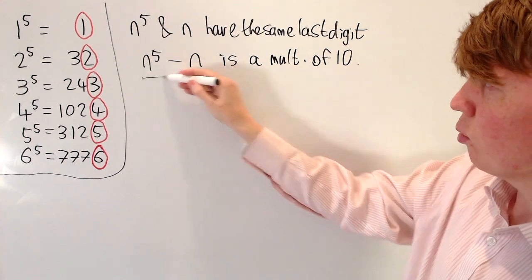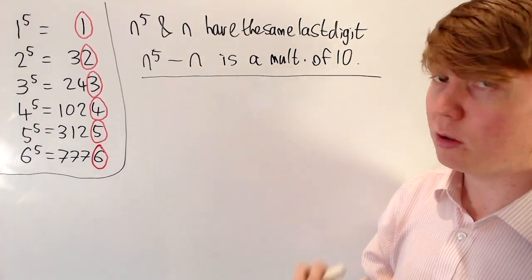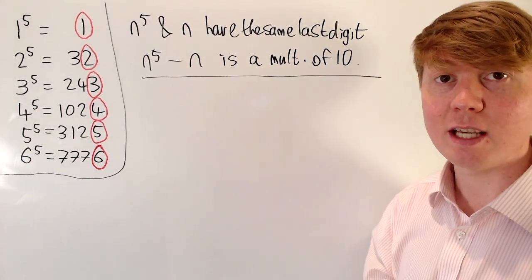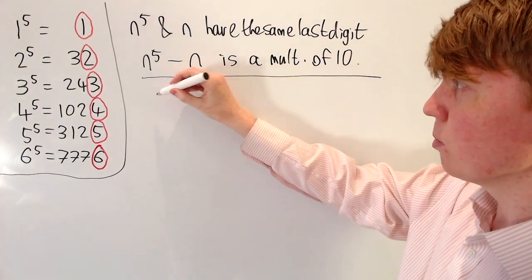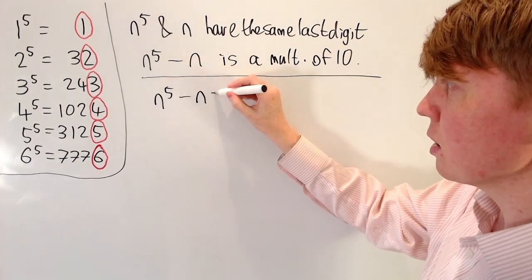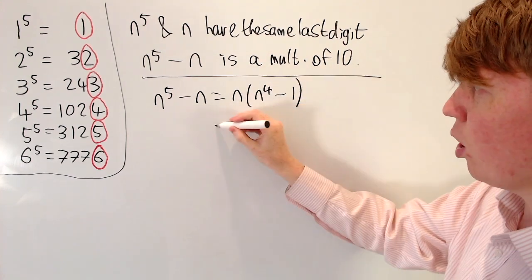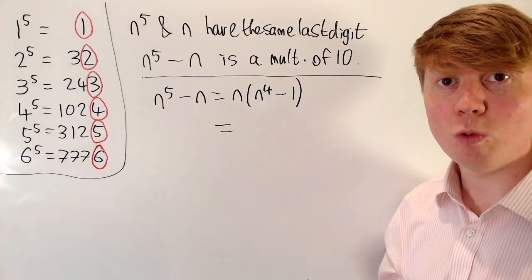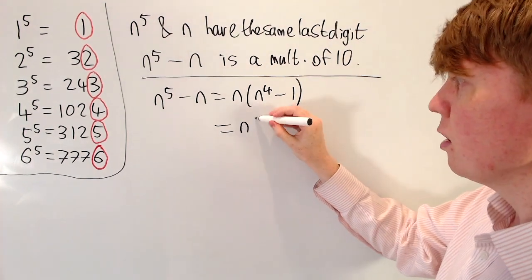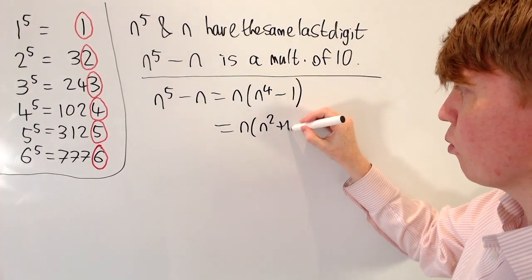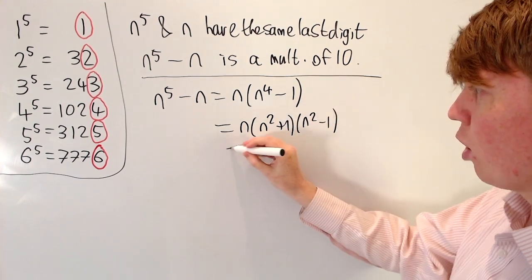So this is where we can now try and prove this. So we'll have a go at factorizing n to the 5 minus n and see if we can show this is a multiple of 10. So first of all, we can take out a factor of n. We get n into n to the 4 minus 1. Then n to the 4 minus 1 is a difference of two squares.